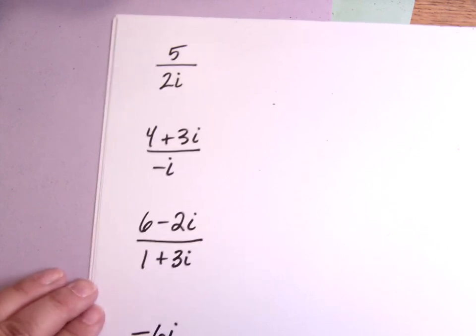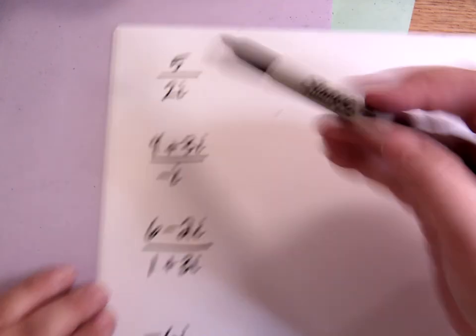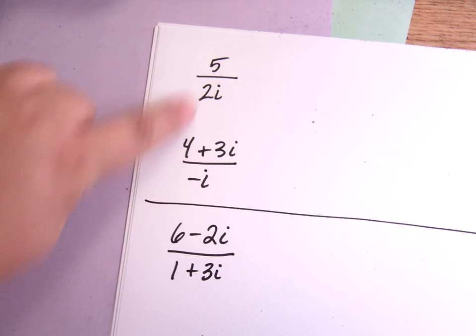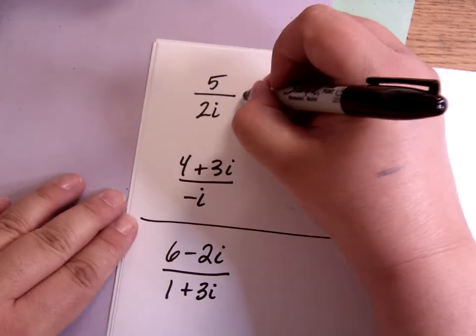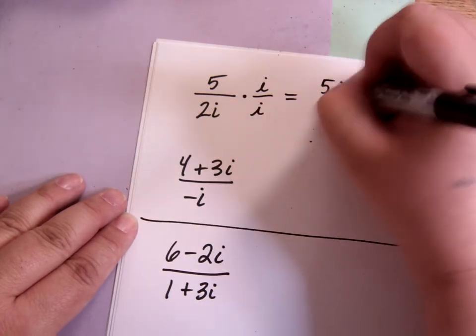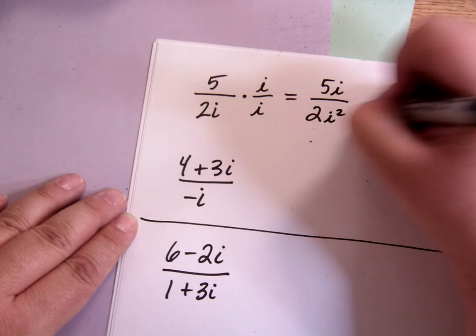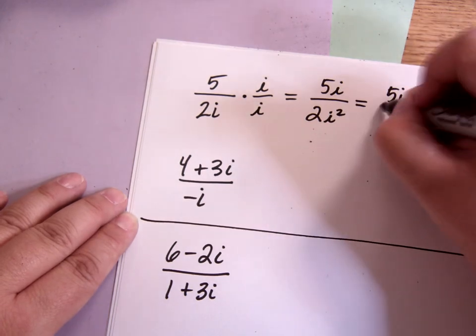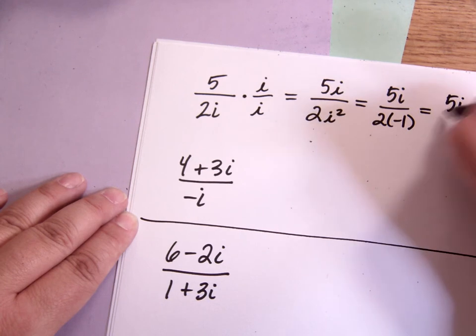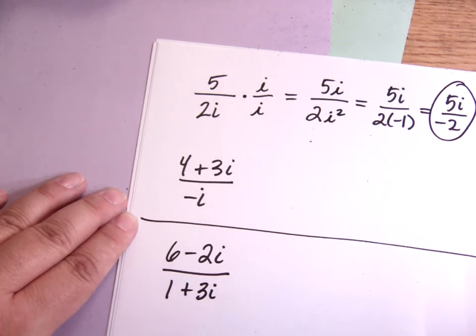And then you can tune back in and see what I got. All right, on the first one, on these two up here, they kind of work differently. No plus or minus in the denominator. If it's only one term in your denominator, just multiply by i over i. So this is 5i over 2i squared, which is 5i over 2 times negative 1, or 5i over negative 2. And that's my answer.